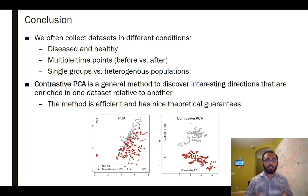And what this allows us to do at the end of the day is to discover patterns that are unique or that are at least enriched in one data set relative to the others. And as we've seen, the method has nice theoretical guarantees, and it's very efficient. It has similar time complexity to standard PCA, because at the end of the day, it's solving a similar optimization problem through eigen decomposition.